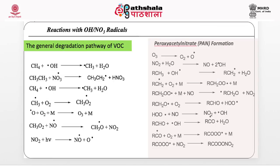Chemical reactions of volatile organic compounds with OH and nitrate radicals produce different intermediate radicals and lead to the formation of peroxy acetyl nitrate (PAN). PAN formation is the key component of photochemical smog. The reaction sequence involves ozone decomposition, reaction of NO₂ with water, reaction of intermediate VOC species with OH radicals, and finally reaction with NO to yield RC(O)OONO₂ — peroxy acetyl nitrate — which remains in photochemical smog.